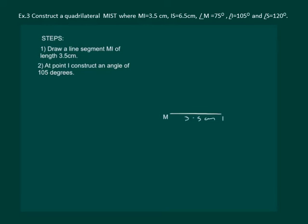So with I as center and using a compass, we will make a curve. Now with this point as center, we mark an arc.